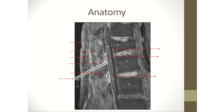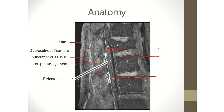Before performing the lumbar puncture, the resident has to be aware of the anatomy through which the spinal needle passes. The spinal needle passes through the following layers: the skin, the subcutaneous tissue, then it pierces the supraspinous ligament, then the interspinous ligament between the spinous processes, then piercing the ligamentum flavum, it reaches the dura mater and enters the dural space which contains the roots of cauda equina and the cerebrospinal fluid.